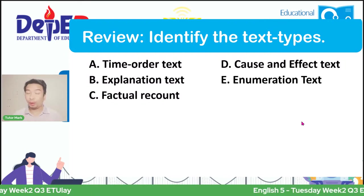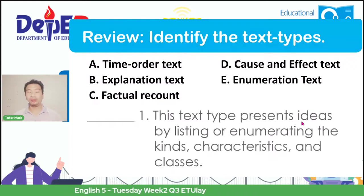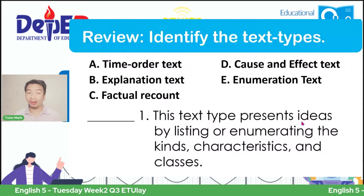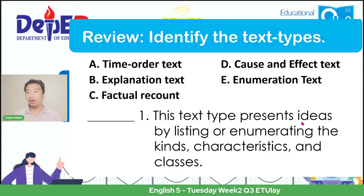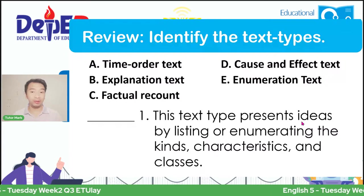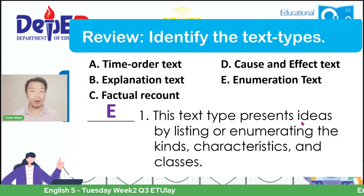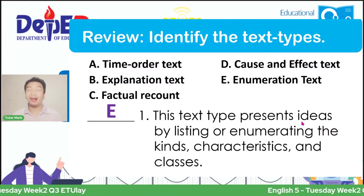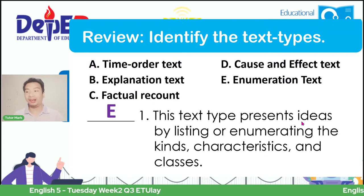I will place questions here and let's see if you can identify what kind of text type each one is. Number one: this text type presents ideas by listing or enumerating kinds, characteristics, and classes. What do you think is the answer? If your answer is letter E, enumeration text, then you are correct—because when you see a context giving different kinds of examples, that is a kind of enumeration text.